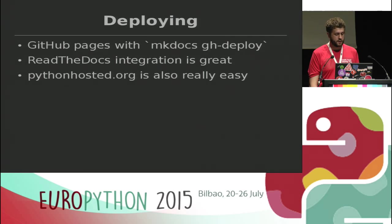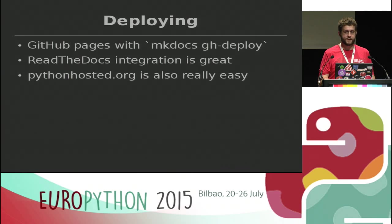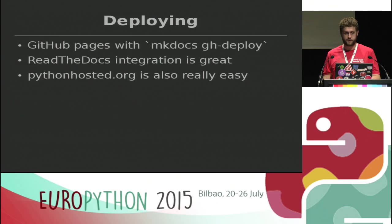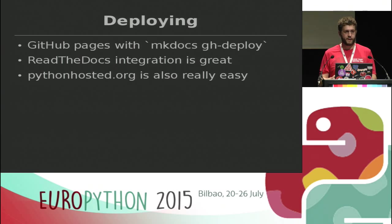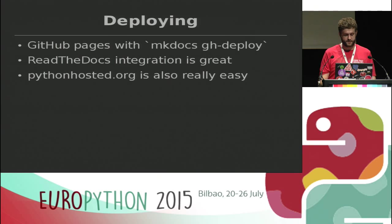I showed you deploying — that was just one of the ways you can deploy easily with MKDocs, because the output is just a static website. GitHub Pages works really well. The ReadTheDocs integration is great and they add some extra things on top — like they do with Sphinx — around different versions, so you can have different builds showing different branches or tags in your Git repository. Python Hosted is also really good — that's the hosting with the Cheese Shop.